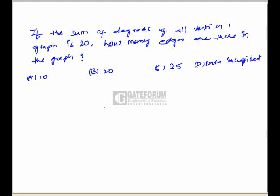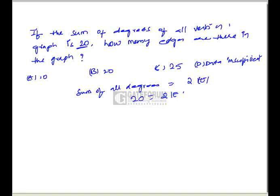Next question: the sum of degrees of all vertices in a graph is given as 20, and we have to find the number of edges. In a graph, there is a property which states that the sum of all degrees is equal to two times the number of edges. Here the sum of degrees is 20, so 20 = 2 × number of edges, which implies the number of edges is 10. The correct option is option A.